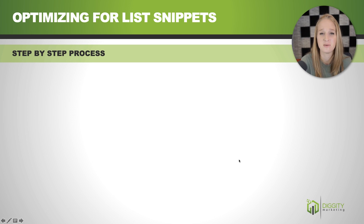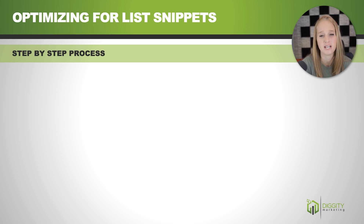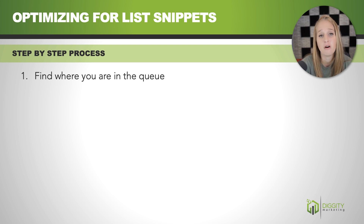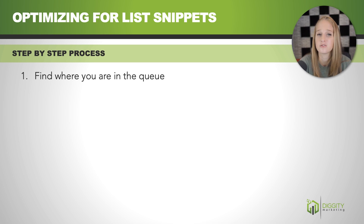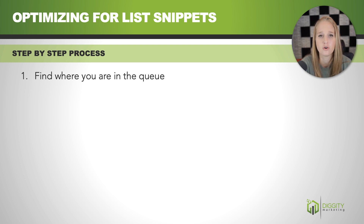Optimizing for list snippets is going to be really important with affiliate SEO specifically, because you're going to see these a lot on buyer's guides — money keyword type of stuff. The first step is figuring out where you are in the queue. Just because Google only shows one snippet doesn't necessarily mean that's the only one they're considering. There's actually a keyboard command you can put straight into Google that's going to show you who is ranking first for the snippet.